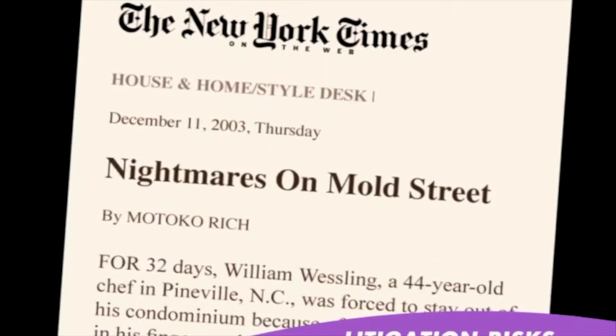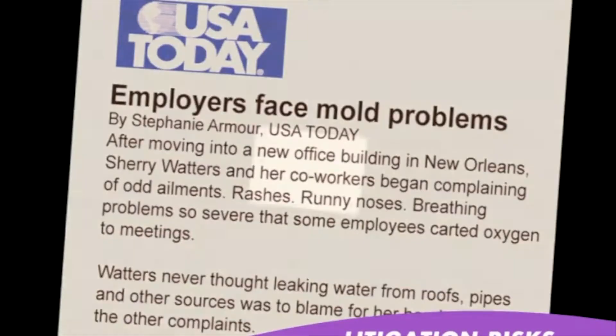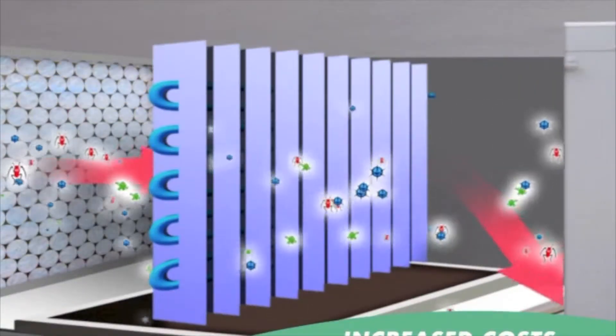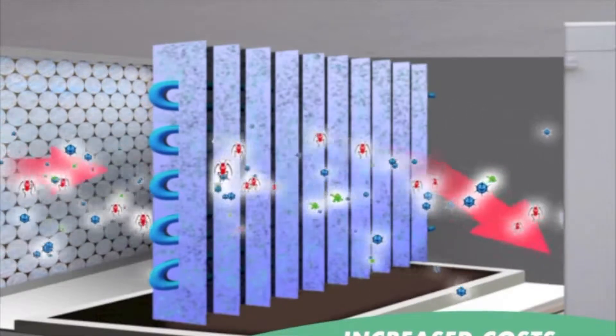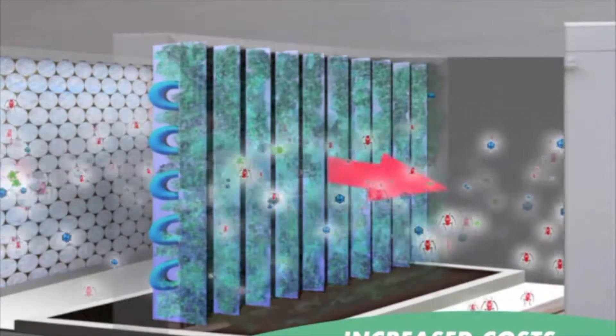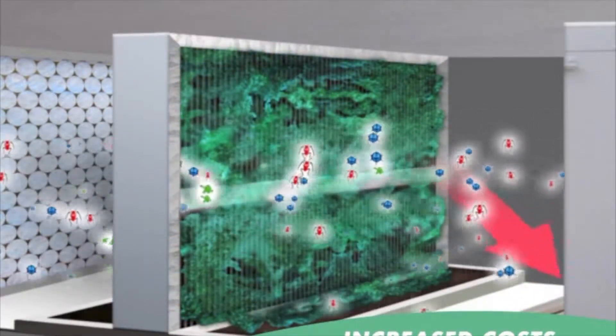Lawyers are litigating mould problems like they used to litigate asbestos. Increased operating costs are caused by the mould covering and blocking the spaces between the heat exchange plates, requiring regular cleaning and increased energy consumption.